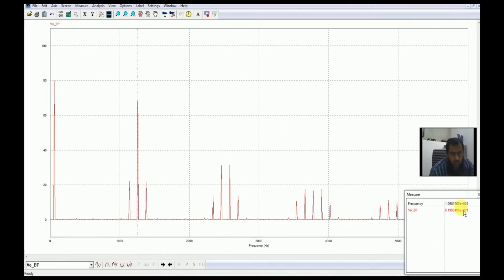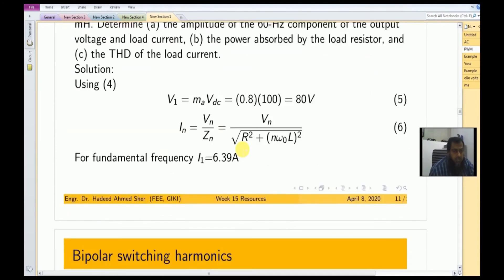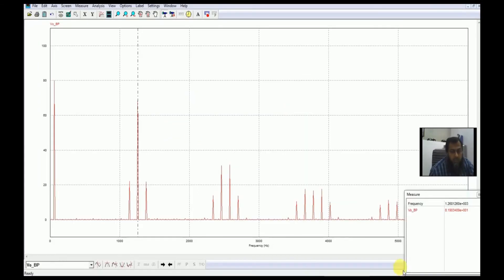At V21, which is the 21st harmonic, it is at this particular point. You can see here at this 1260 Hertz we are having 81.9 volts. In the calculation we calculated it to be equal to 82 volts. The next harmonic that is expected to appear is at MF plus 2 or MF minus 2, which is equal to 1140 and 1380.